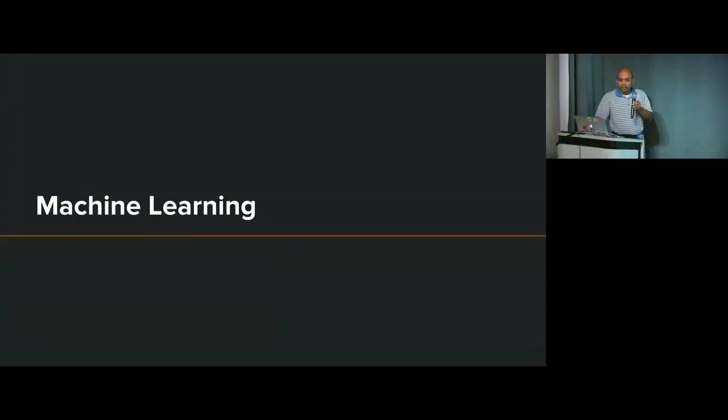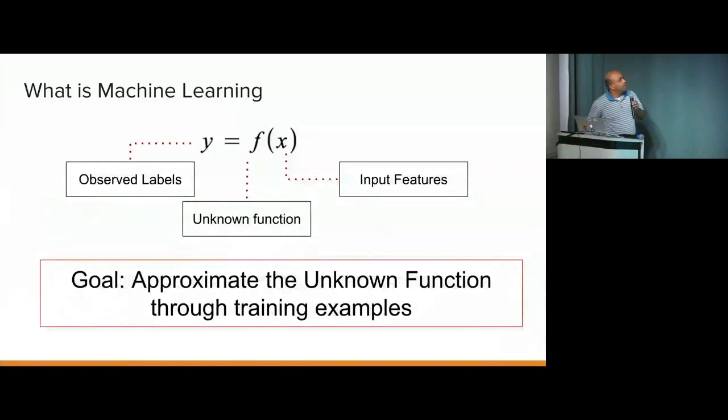All right, so what is machine learning? Machine learning is trying to approximate that unknown function in the middle which, given a set of inputs or also called examples and some labels, you're trying to approximate this unknown function. That's the goal of machine learning.